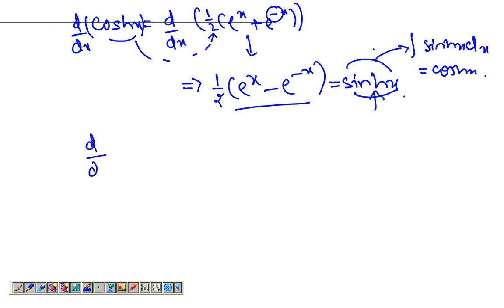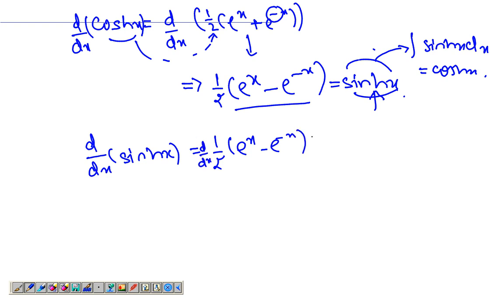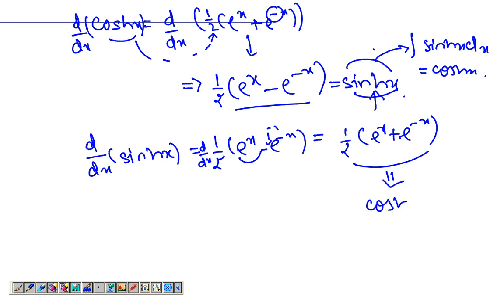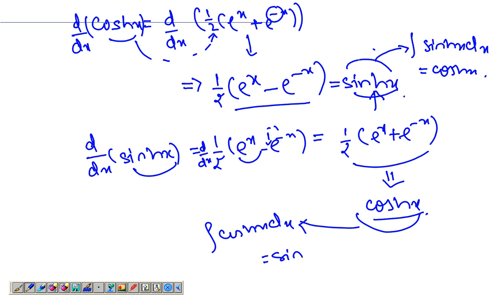Now let's take sinh(x). Differentiating (e^x - e^(-x)) / 2 with respect to x: the derivative of e^x stays the same, the negative comes out again to give a positive, yielding cosh(x). So the derivative of sinh(x) is cosh(x), and hence the integral of cosh(x) is sinh(x). That's how you differentiate the hyperbolic functions.